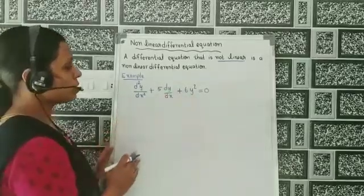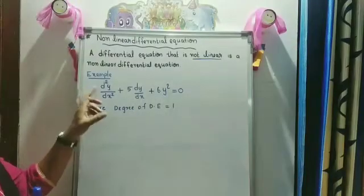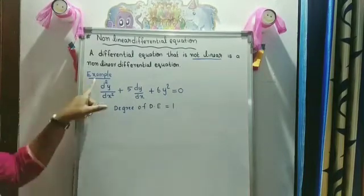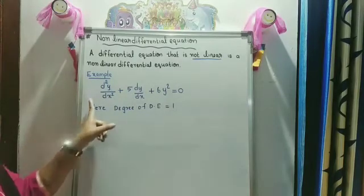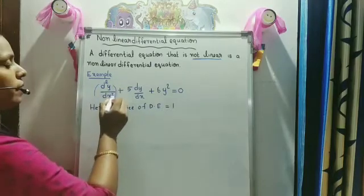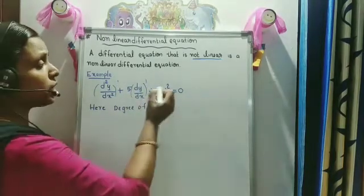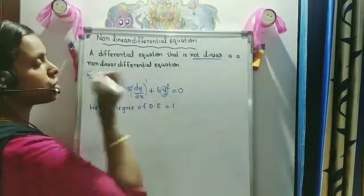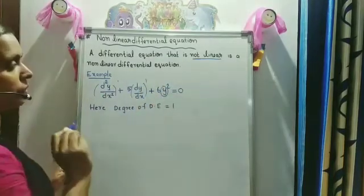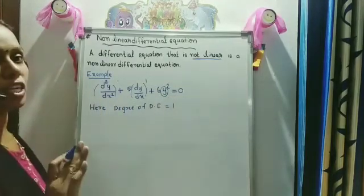In this equation, y is the dependent variable and x is the independent variable. The degree is 1 since the highest derivative d²y/dx² has power 1, and the exponent of all derivatives is 1. However, the exponent of the dependent variable y is 2, so this differential equation is non-linear.